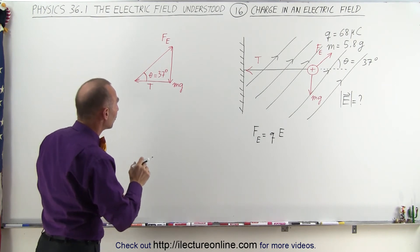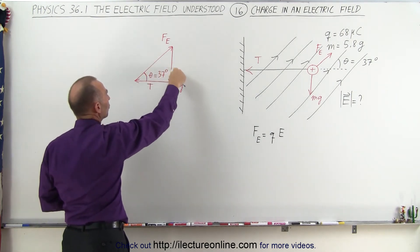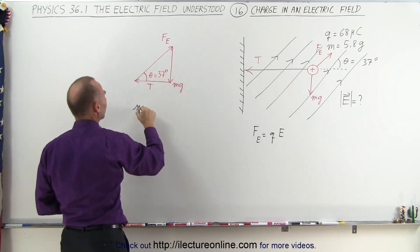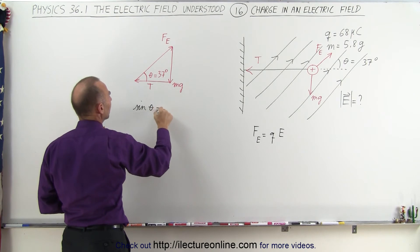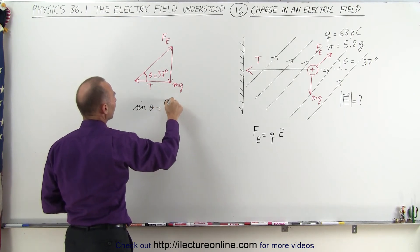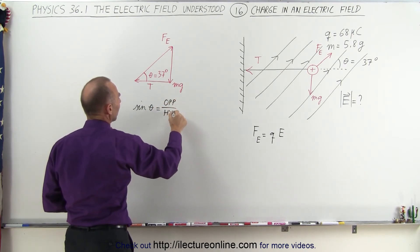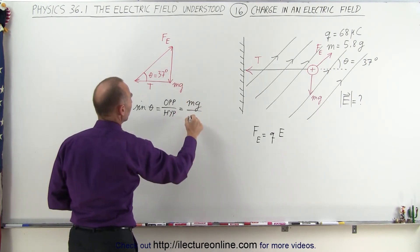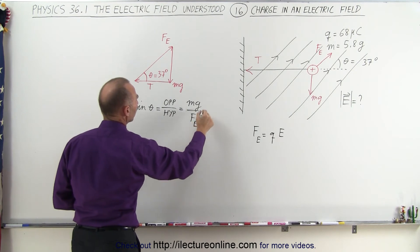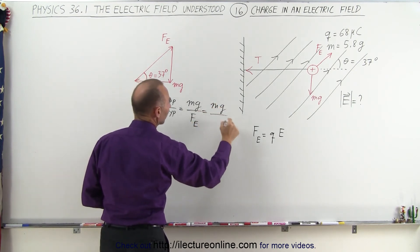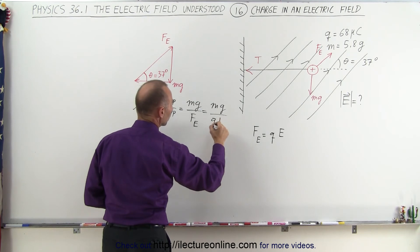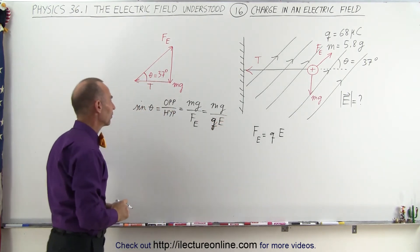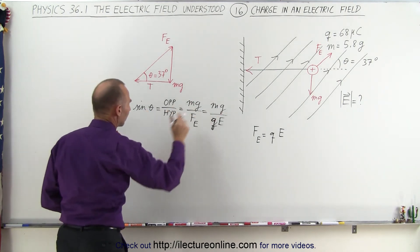I think what we want to do is do the following. We want to relate these two to each other. That's the hypotenuse. That's the opposite side to the angle. So we'll start with the definition that the sine of the angle theta is equal to the ratio of the opposite side divided by the hypotenuse. In this case, the opposite side will be Mg, and the hypotenuse will be the force due to the electric field, which is Mg divided by Q, that should be a Q, times the strength of the field.